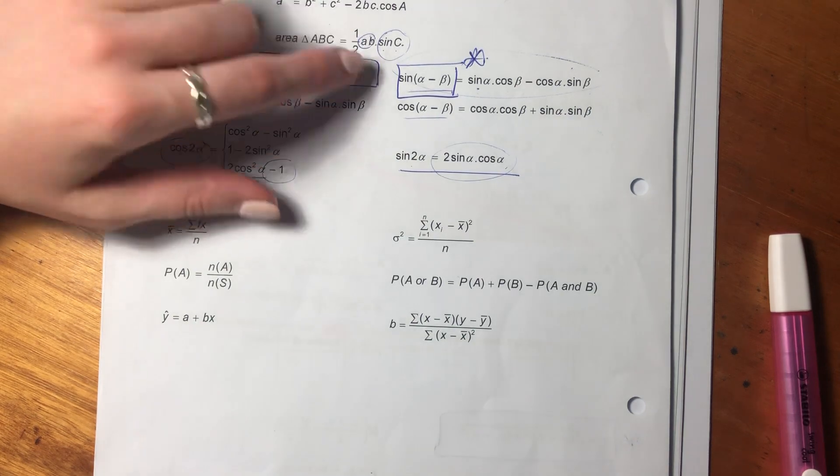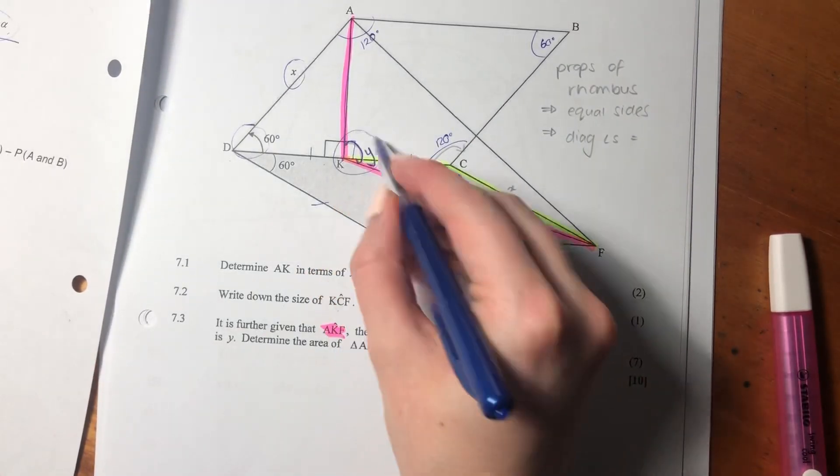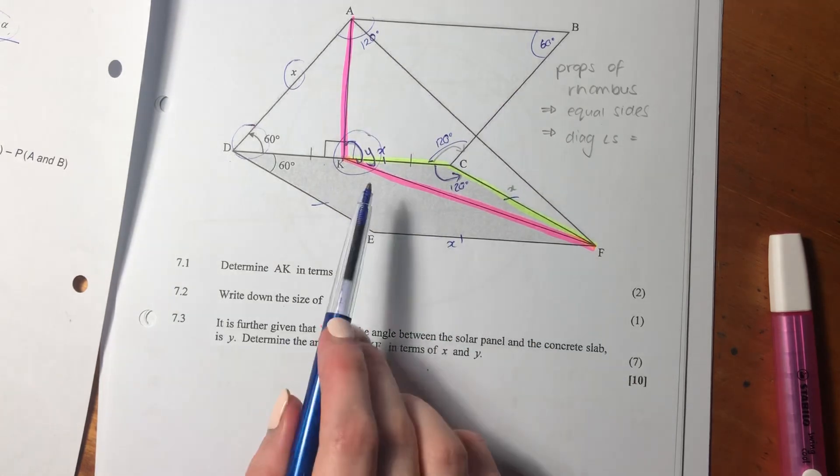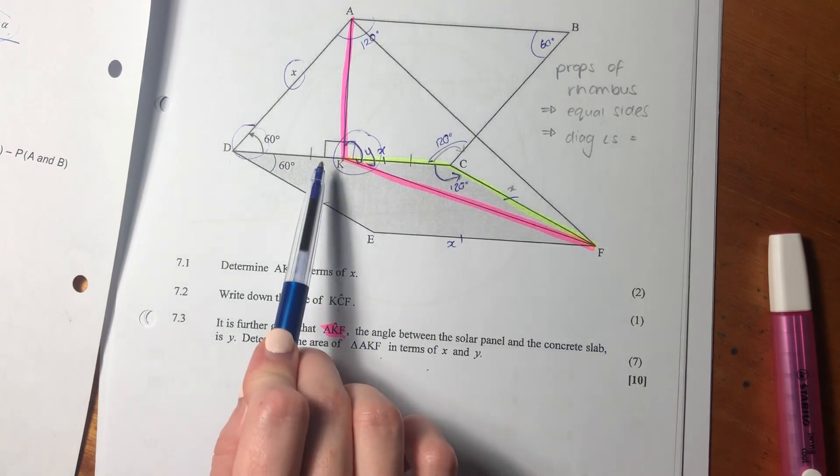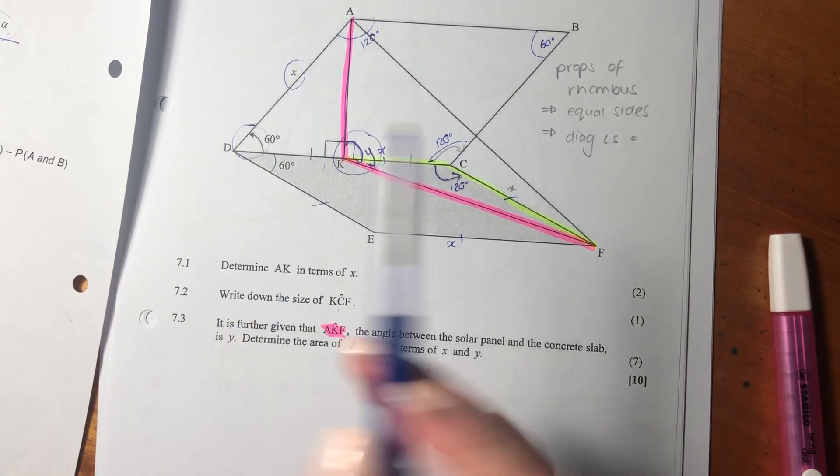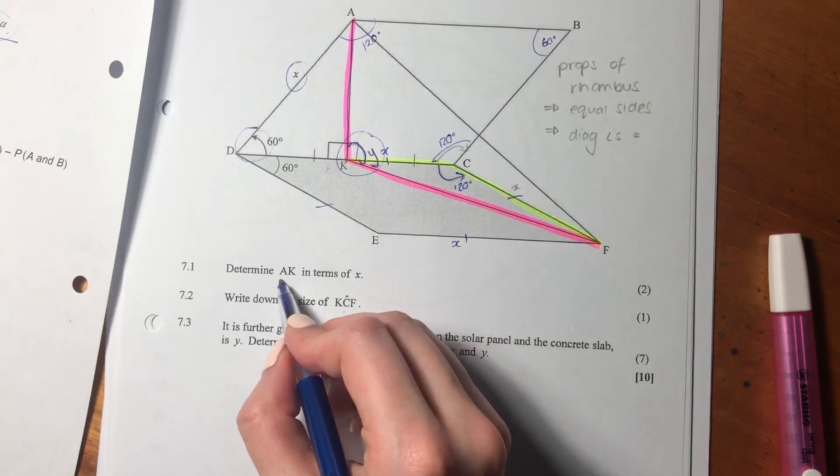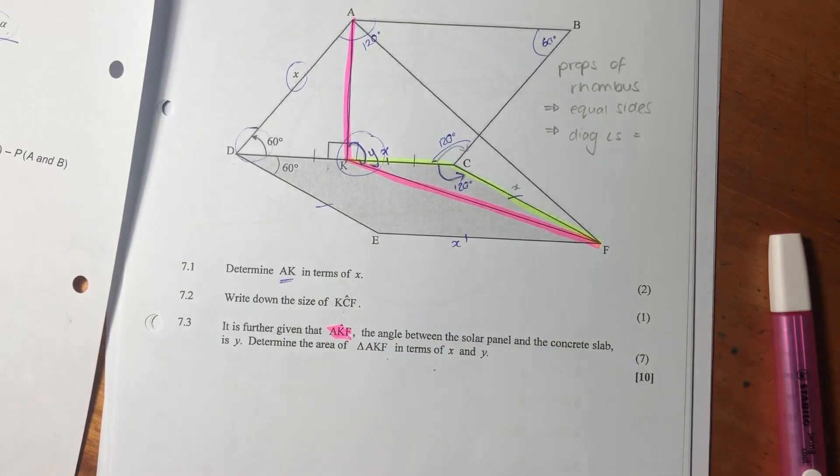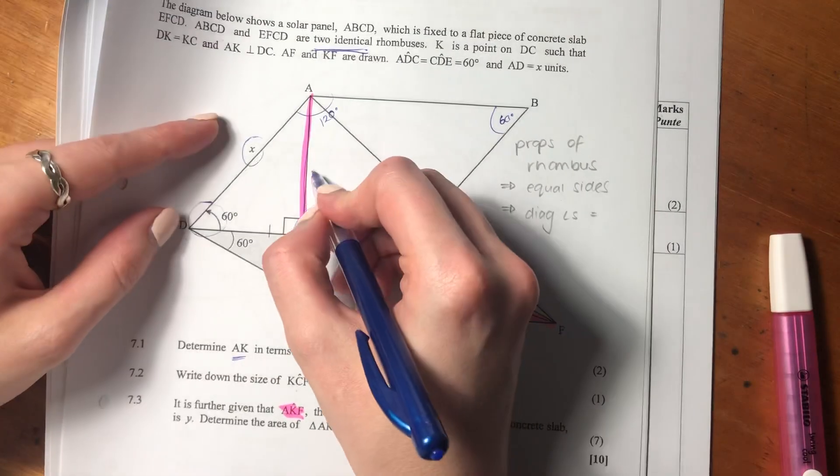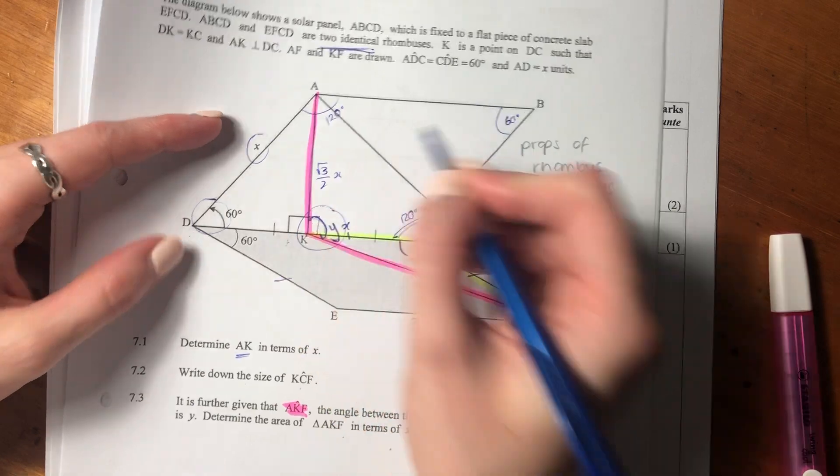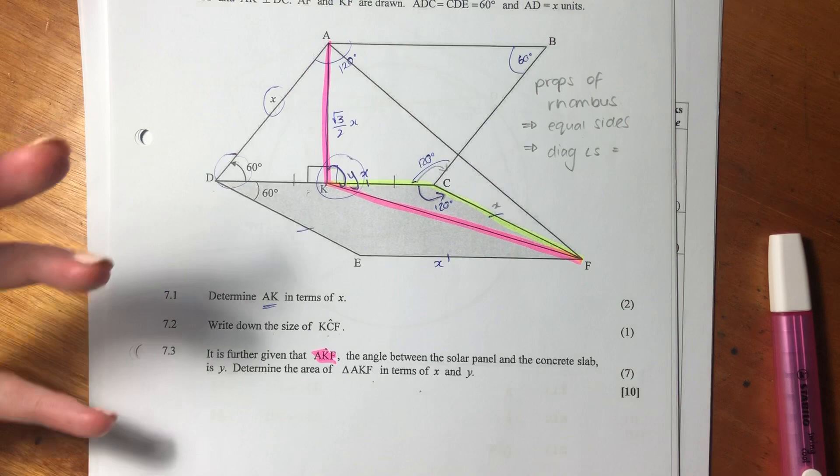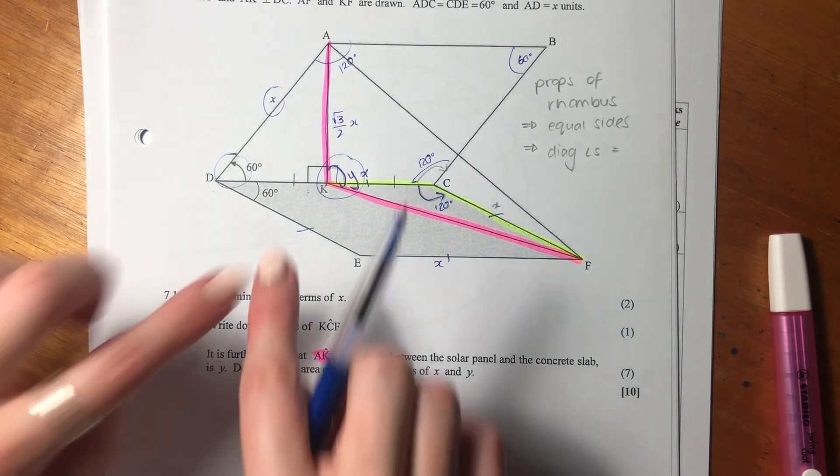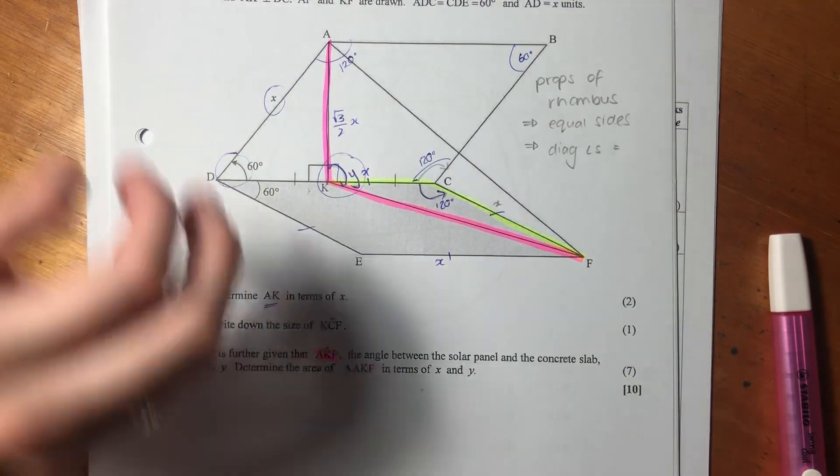We know what sine C is in this instance - it would be Y. We want to get the length of KF and the length of AK. But we've already found the length of AK in our previous question. We had that AK equals square root of 3 over 2X. So if we find the length of this side, we can find an area.